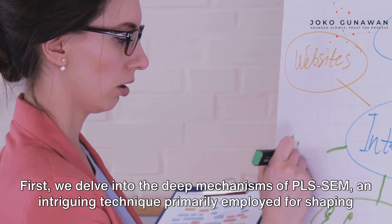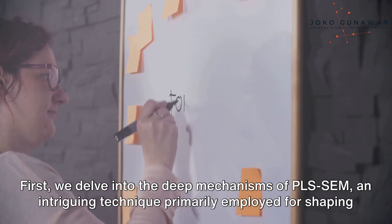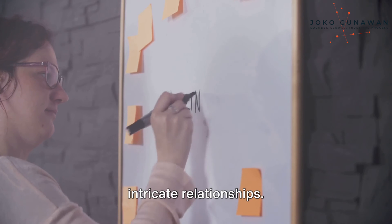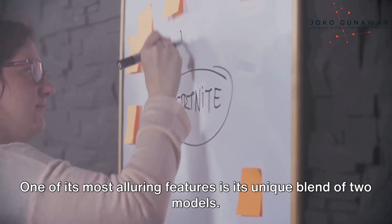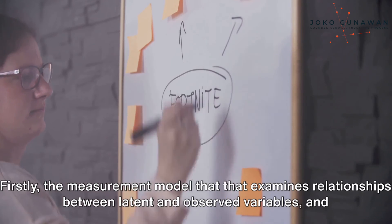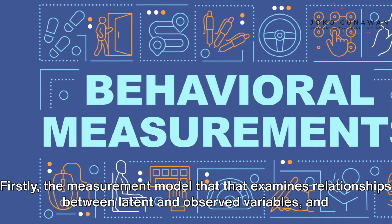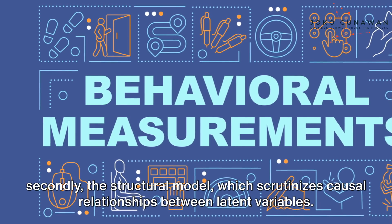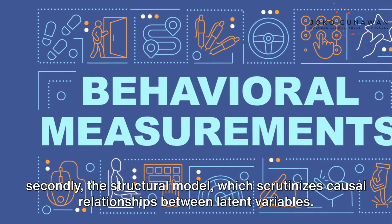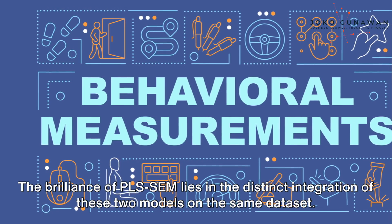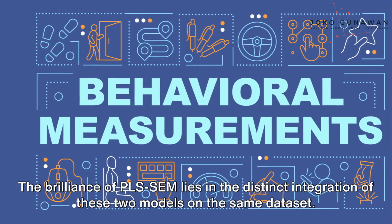First, we delve into the deep mechanisms of PLS-SEM, an intriguing technique primarily employed for shaping intricate relationships. One of its most alluring features is its unique blend of two models: the measurement model, which examines relationships between latent and observed variables, and the structural model, which scrutinizes causal relationships between latent variables. The brilliance of PLS-SEM lies in the distinct integration of these two models on the same dataset.